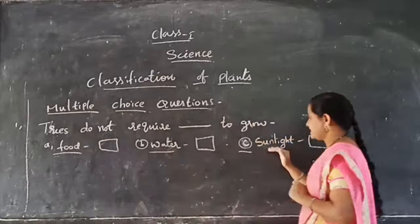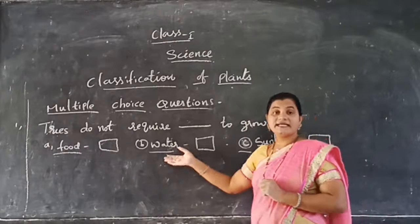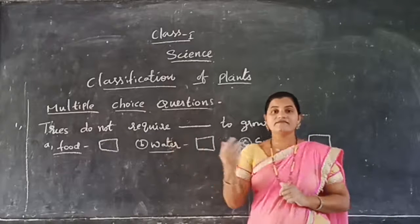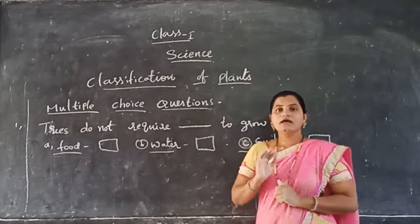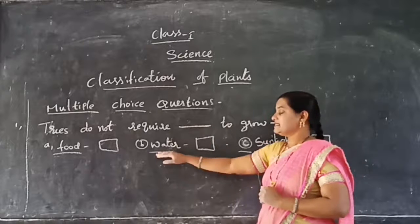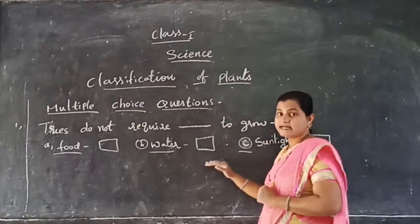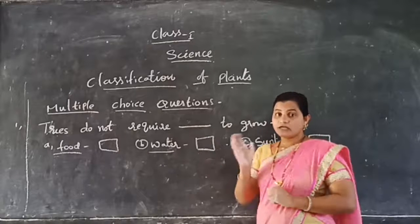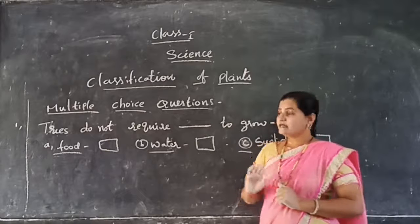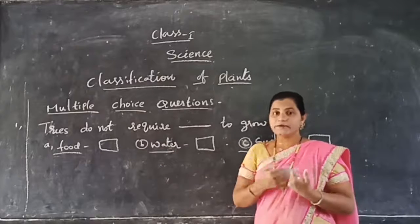But water and sunlight — both are taken by the plant from the outer environment. And food is prepared inside of the plant. Water and sunlight are essential and compulsory for the plant for preparation of food, and food can be prepared on its own.